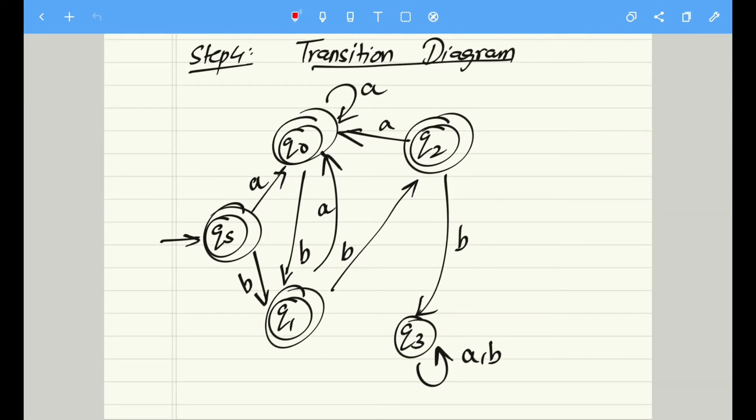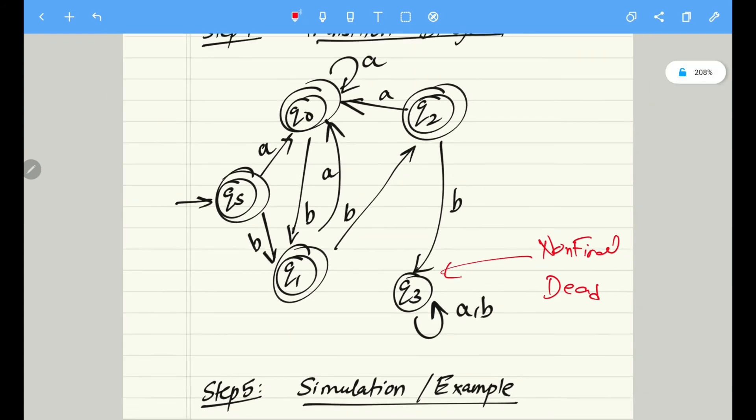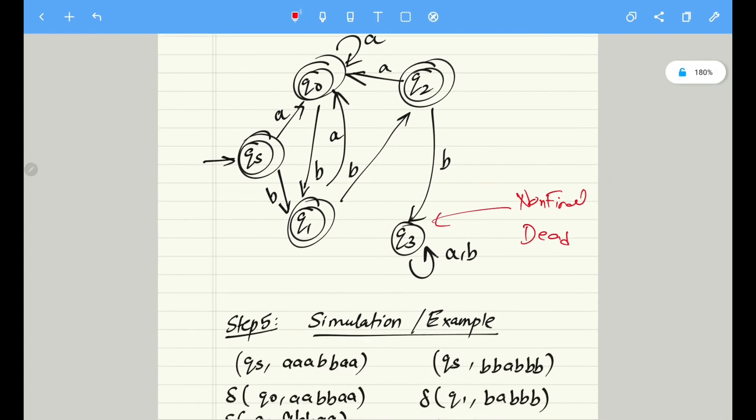Based upon the transition table, we need to construct the transition diagram. So as you can see, all the states except q3 is my final state. q3 is a non-final state, and hence it is a dead state as well. So I'm writing it over here: q3 is a non-final state as well as a dead state. Whatever be the input, it remains in the same state.